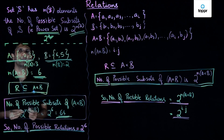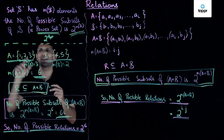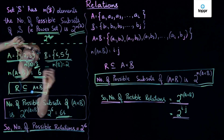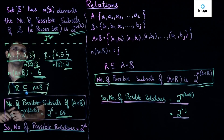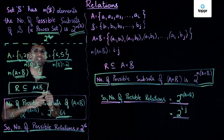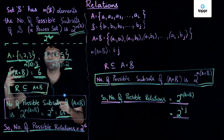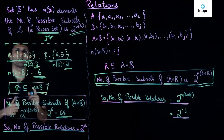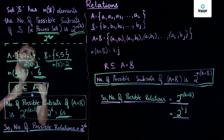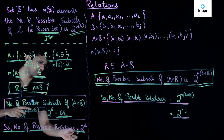We can find 64 different possible subsets when given sets A and B containing 3 and 2 elements respectively. Since a relation is defined as a subset of A cross B, the number of different possible relations between A and B is equal to the number of different possible subsets, which in this case is 2 raised to 6.